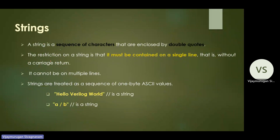Next, a string in Verilog is a sequence of characters enclosed by double quotes. It must be contained on a single line — that is, without a carriage return, so you cannot write a string across multiple lines. For example, 'hello verilog' is a string ASCII value. Another example: 'a/b"' is also considered a valid string.